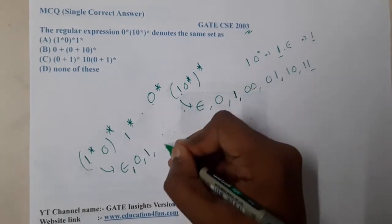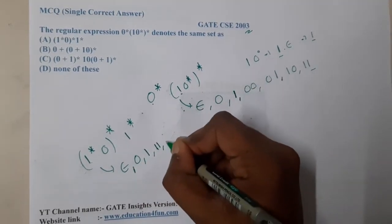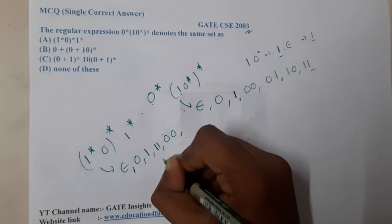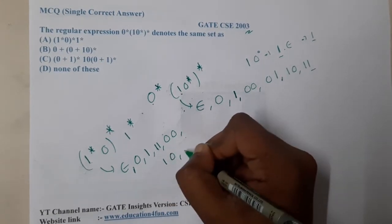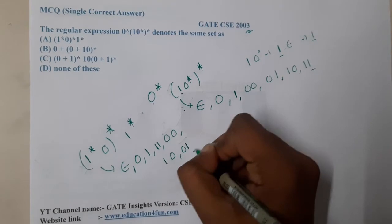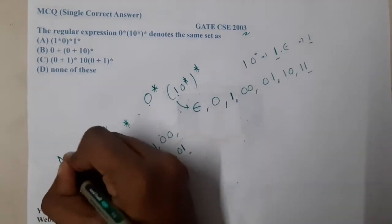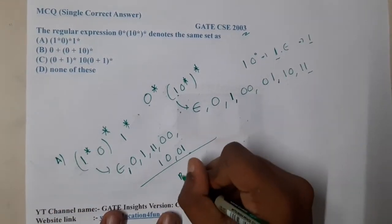Can we generate one-one? Yes. Can we generate zero-zero? Yes. Can we generate one-zero? Yes. Can we generate zero-one? Yes. So here also everything seems possible. This is with respect to option A.